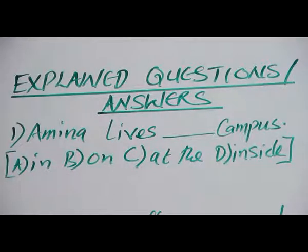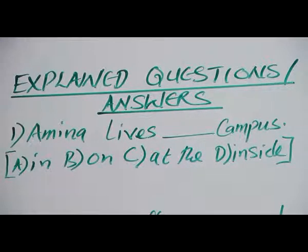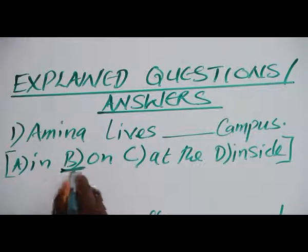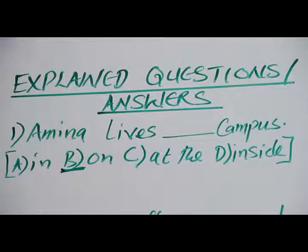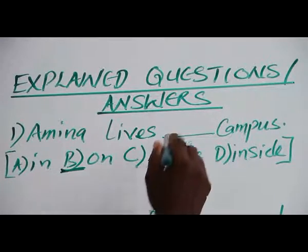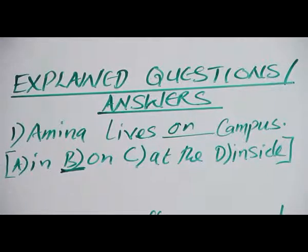Question one: 'Animal list ___ campus.' Should we say 'in campus,' 'on campus,' 'at the campus,' or 'inside campus'? Our answer is B — 'on campus.' The preposition 'on' is the usual colocation used when talking about campus. So take note of that: 'on campus.'